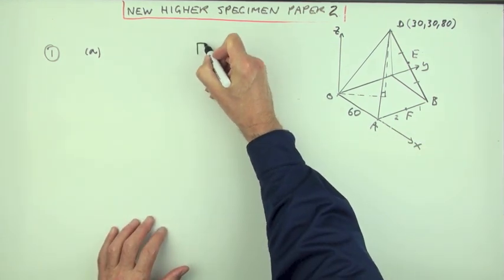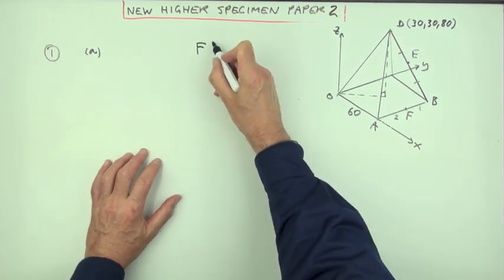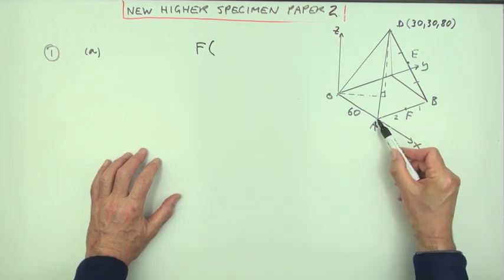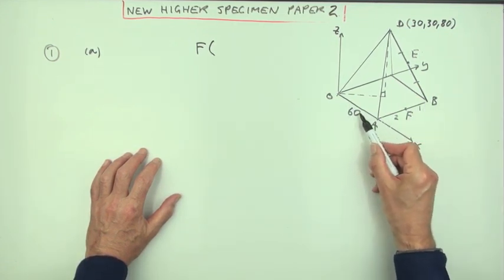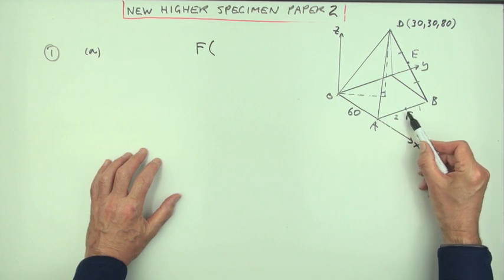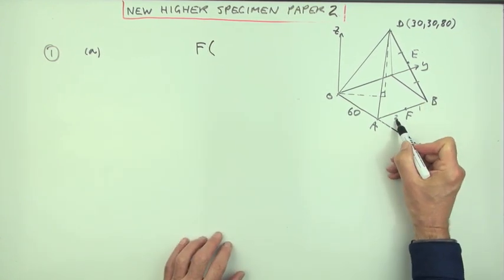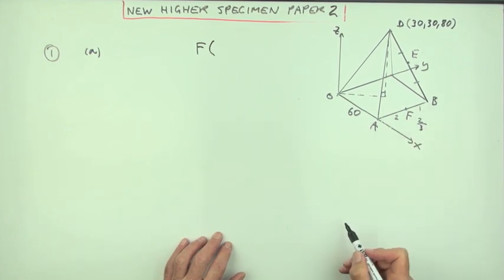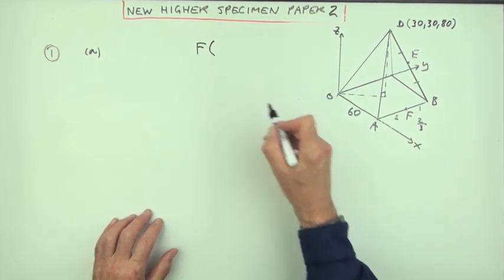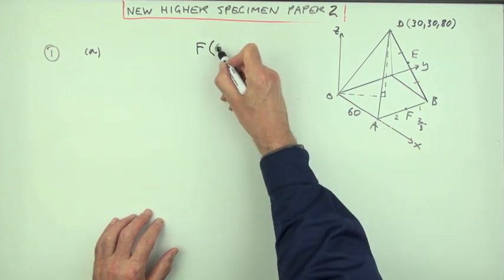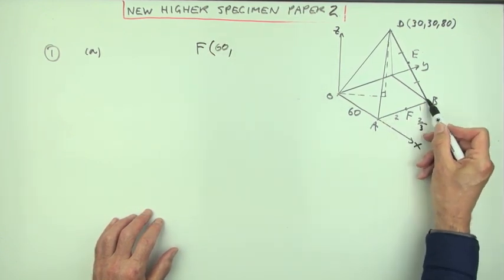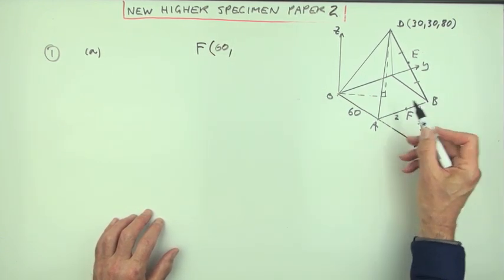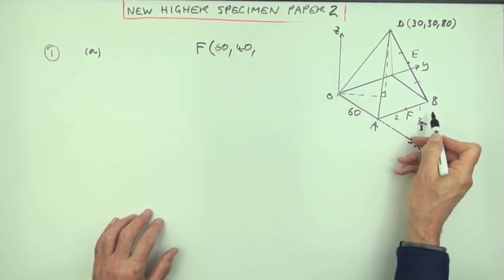Well, it'd actually be easier to get F first, maybe. Because F divides AB, and I know that A is 60 along, so B would be 60 back. And F, since it's in the ratio of 2 to 1, is two-thirds of the way along 60, so that'll be 40. So to get to F, it'll be go along 60, go back 40, that's two-thirds of the 60, and don't go up at all.